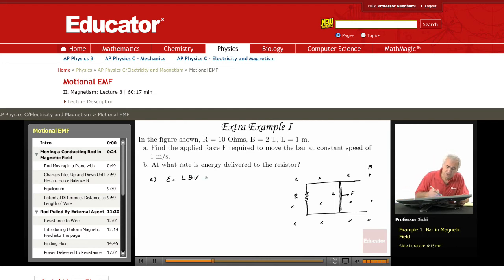So L is one meter, B is two Tesla, and V is one meter per second, so the induced EMF is two volts. Since R is 10 ohms, it means that there's an induced current I which is EMF over R, which is 0.2 amperes.